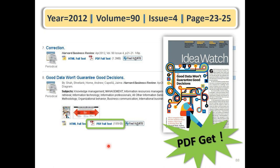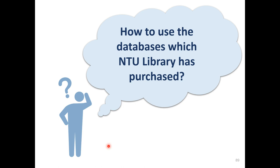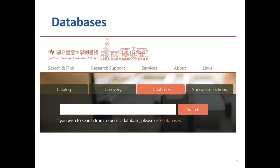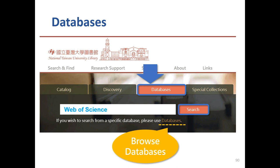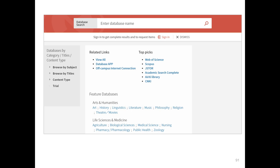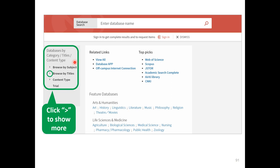Now you know how to use the catalog and discovery system. In addition, there are some databases to search for specific types or subjects of resources. Using a database can narrow down the search scope. If your information need is specific, a database is more suitable. To use databases, go to the library website and click the third tab, Databases. If you know a specific database, type the database title in the search bar. If you want to browse all accessible databases through NTU Library, click the Database link under the search bar. Here are three kinds sorted by content type, subject, and title for browsing over 600 databases provided by NTU Library.